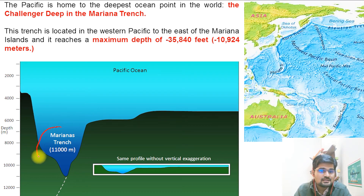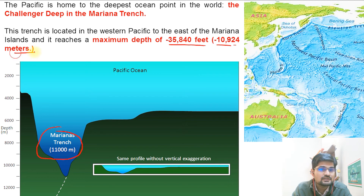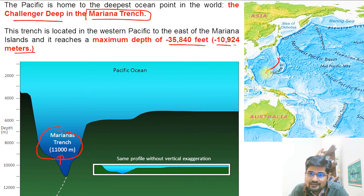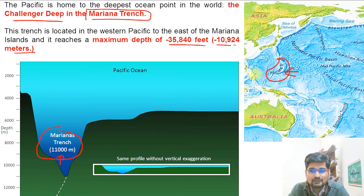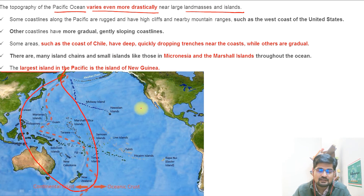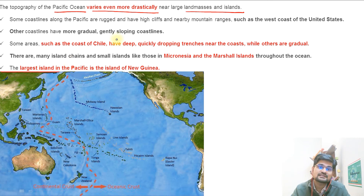The Mariana Trench is 35,840 feet deep, roughly 10,924 meters, estimated at about 11,000 meters. The Pacific is home to the deepest ocean point in the world, called Challenger Deep, located in the Mariana Trench in the western Pacific. The topography of the Pacific Ocean varies even more drastically near land masses and islands, showing a huge diversity of physical features.